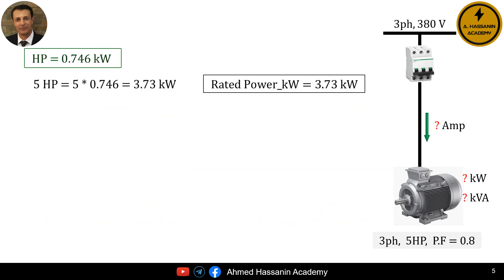If the rated power of the motor is given in HP, we can convert this value to KW using the equation: one horsepower equals 0.746 KW. Therefore, for 5 horsepower: 5 HP equals 5 multiplied by 0.746, which means 5 horsepower equals 3.73 kilowatts. Thus, the rated power of the motor is 3.73 kilowatts.